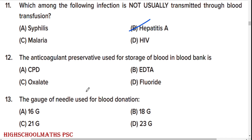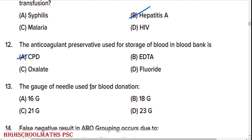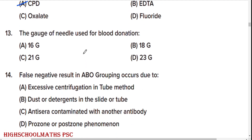The anticoagulant preservative used for storage of blood in blood bank is CPD. The gauge of needle used for blood donation is option A: 16 gauge.